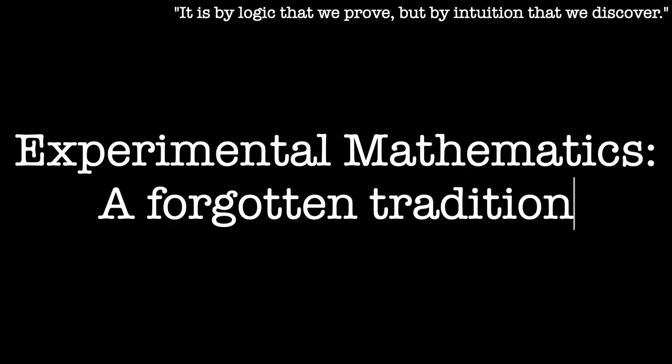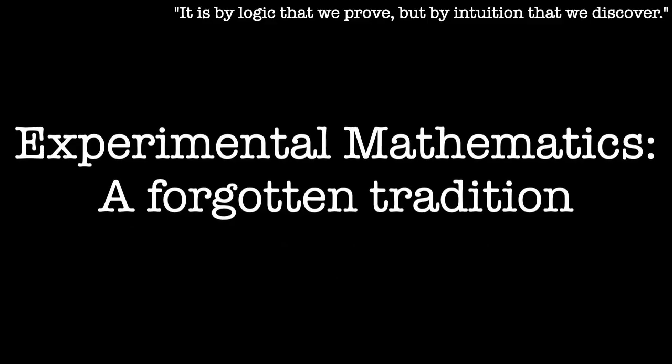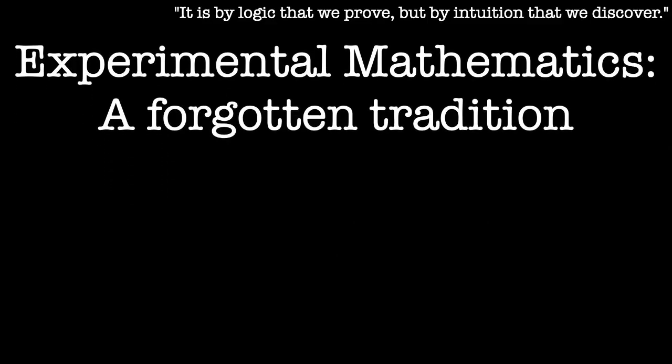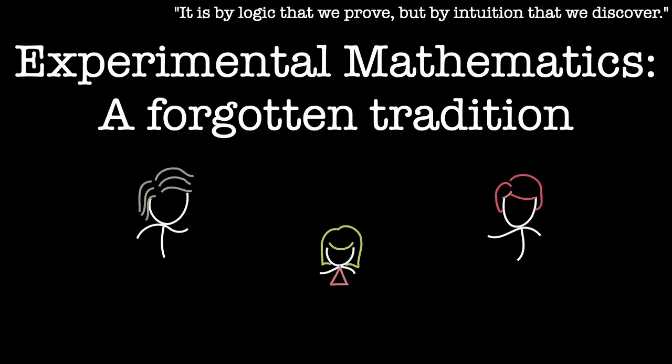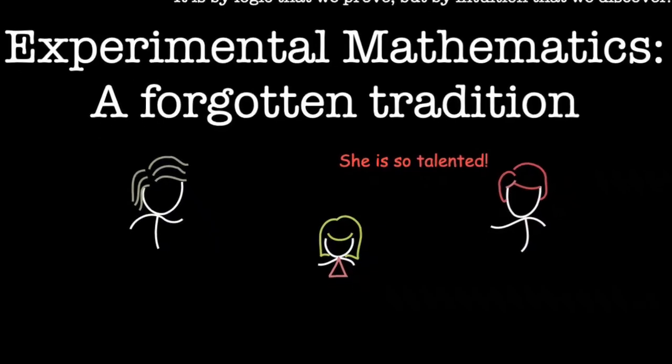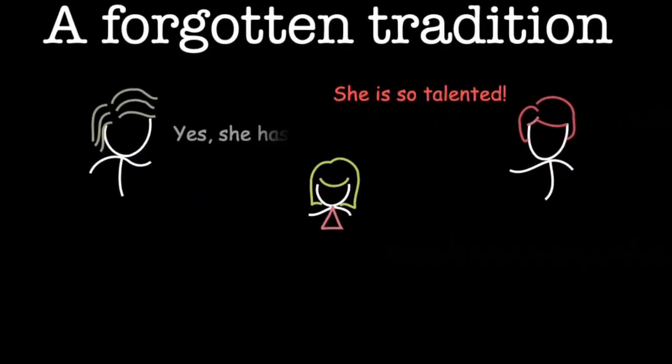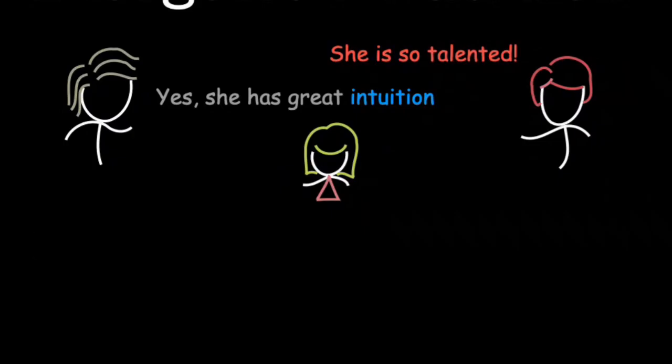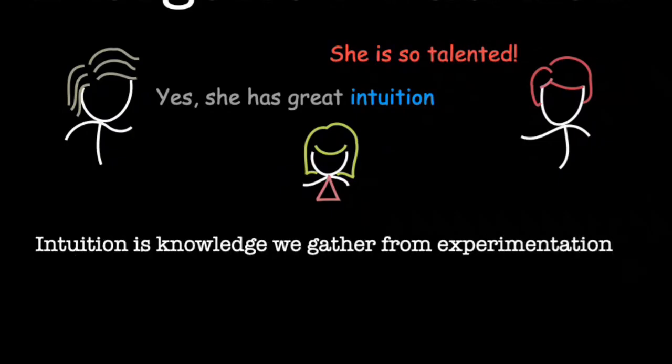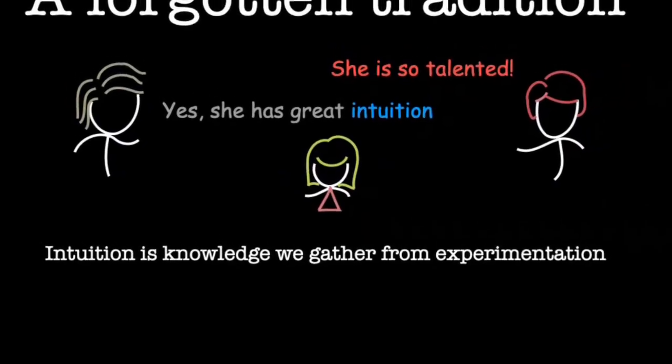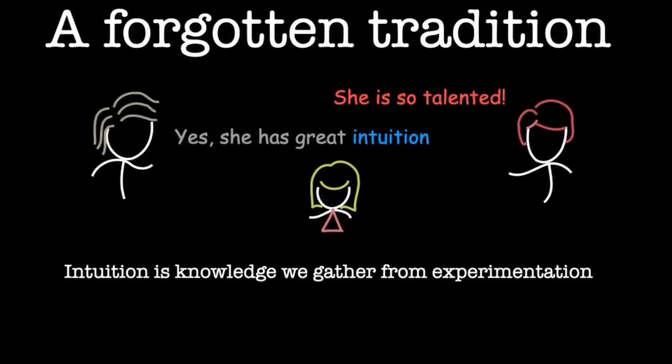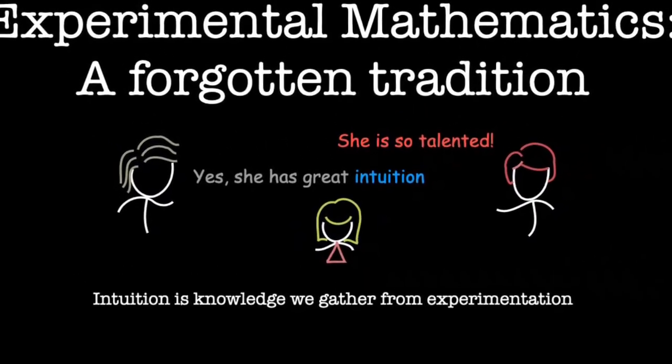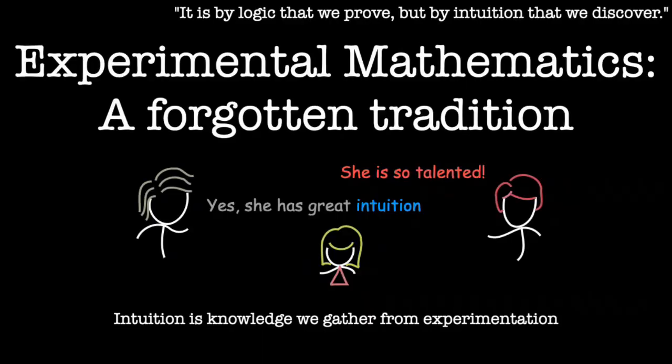Experimental mathematics - a forgotten tradition. The highest compliment mathematicians give a newcomer is always the same: intuition. We talk about intuition as if it were magic, a gift. But intuition isn't mysterious at all. Intuition is the knowledge we collect from experimentation. Talented novices are usually the ones who played, who explored beyond the textbook, who tried things, broke things, and weren't afraid to be wrong.